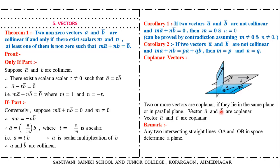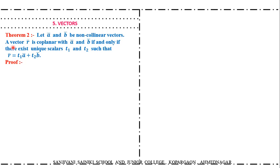Theorem two: any two intersecting lines always determine a single plane. If A bar and B bar are non-collinear vectors, a vector R bar is coplanar with A bar and B bar if and only if there exist unique scalars T1 and T2 such that R bar equals T1·A bar plus T2·B bar.